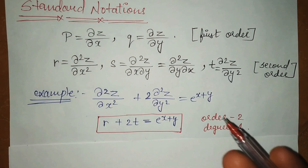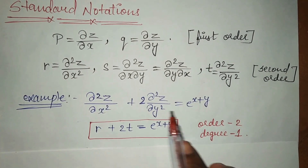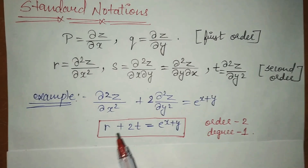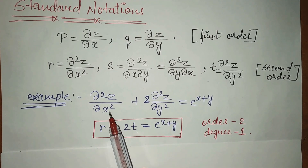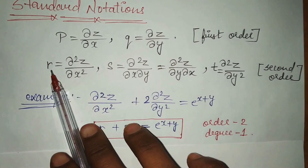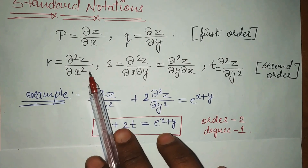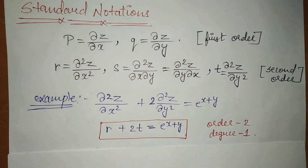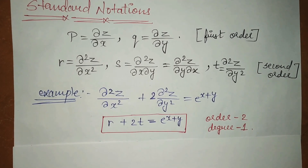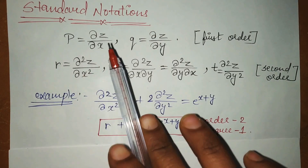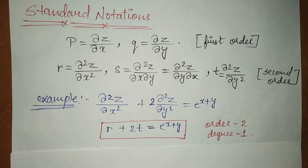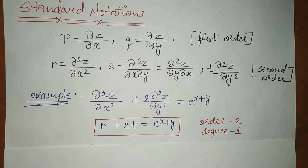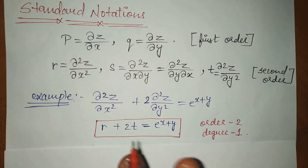Let me show you the things I mentioned through an example. If your question has this kind of equation, I told you that in the place of del squared z upon del x squared, you just have to put the value r. Del squared z upon del x squared — you have to put r there. This is the standard notation. It's all from your book — I haven't defined anything on my own. For whatever value comes, please put that same value.